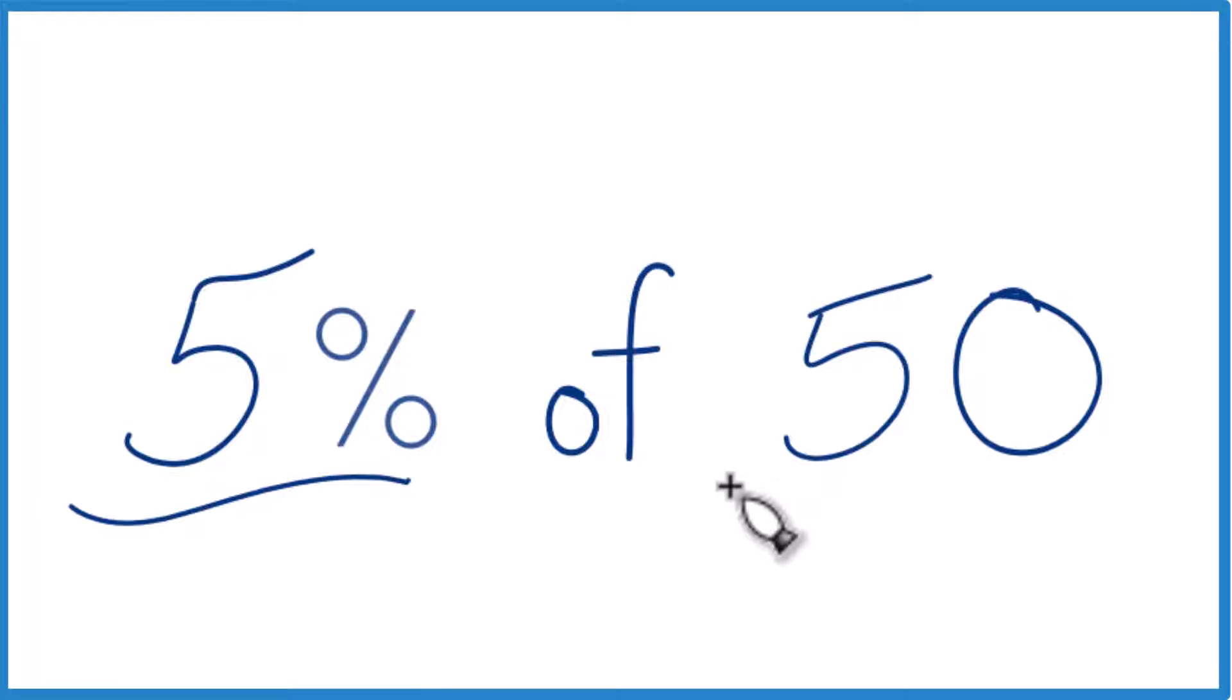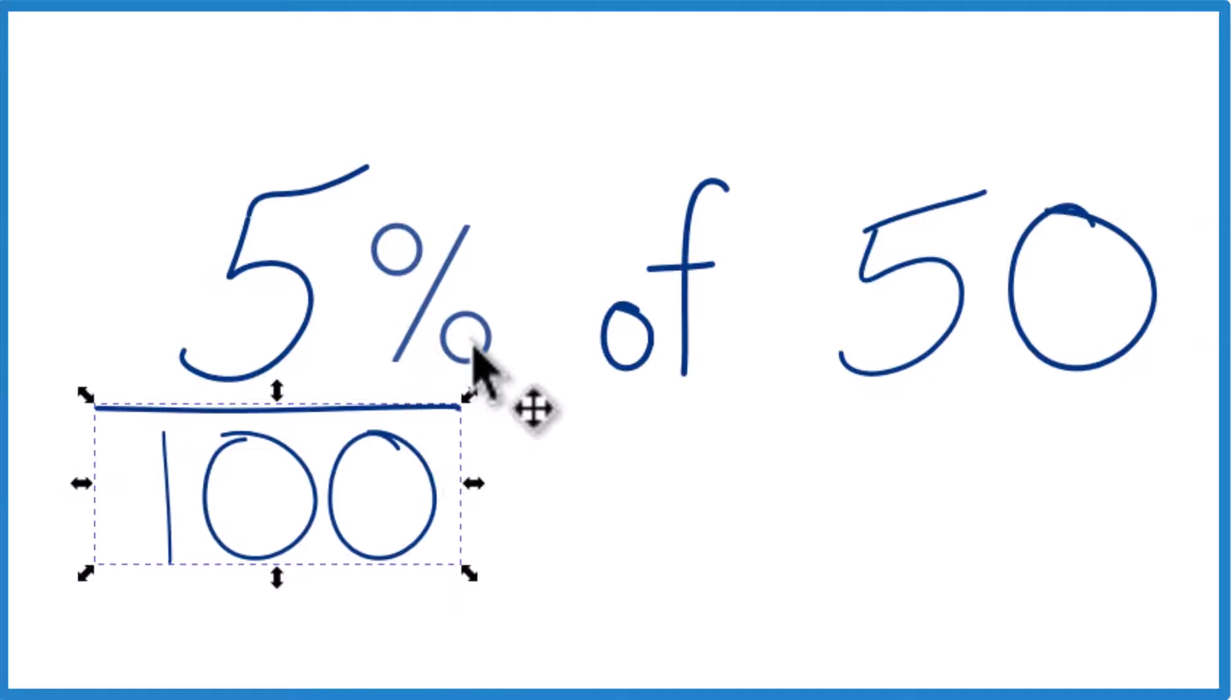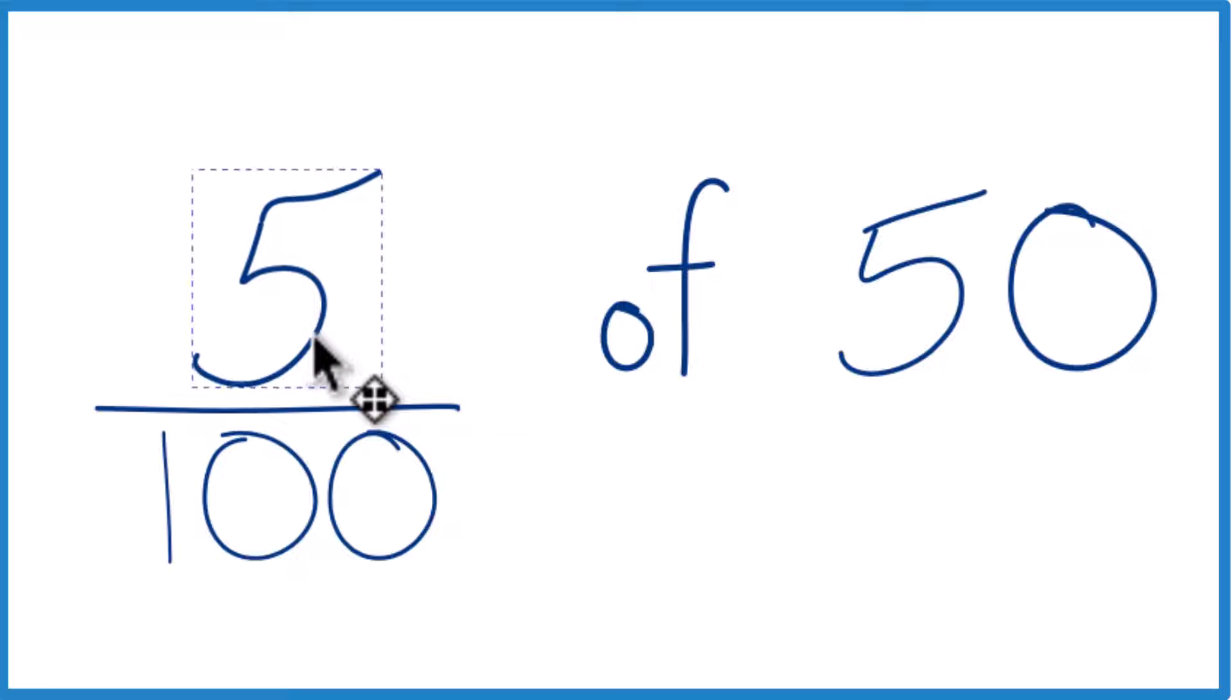Let's find 5% of the number 50. So here's how you could do it. You can think of this 5% as 5 over 100. We don't need the percent sign there. That's 5 over 100.